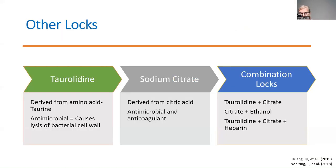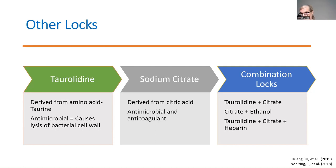Other locks for CAPC prevention include taurolidine — an amino acid derived from taurine that causes lysis of the bacterial cell wall — and sodium citrate, derived from citric acid, which is antimicrobial and also has anticoagulant properties, currently the most common lock used in the home setting. Often the best approach is a combination lock: taurolidine plus citrate, citrate plus ethanol, or taurolidine plus citrate or heparin for anticoagulation.